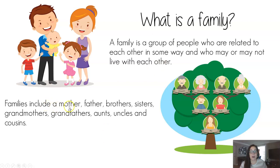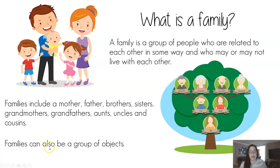Families include a mother, father, brother, sisters, grandmothers, grandfathers, aunts, uncles, and cousins. So our families are big — they have lots of different members. But are people the only kinds of families? Nope. Families can also be a group of objects or even animals. In today's story, we're going to learn a little more about that.